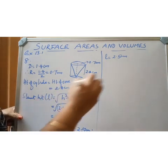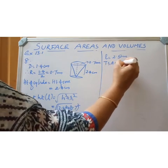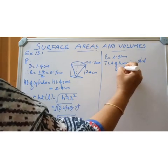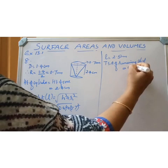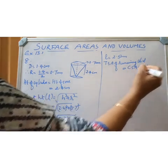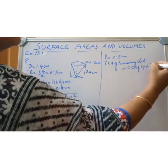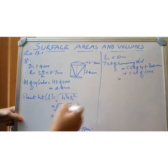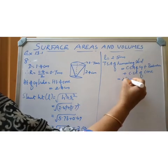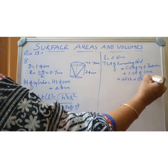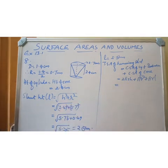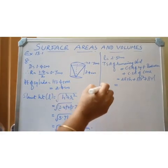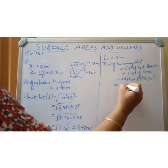Now we write the formula: TSA of remaining solid equals CSA of cylinder plus base area plus CSA of cone. That is 2πRH plus πR² plus πRL.